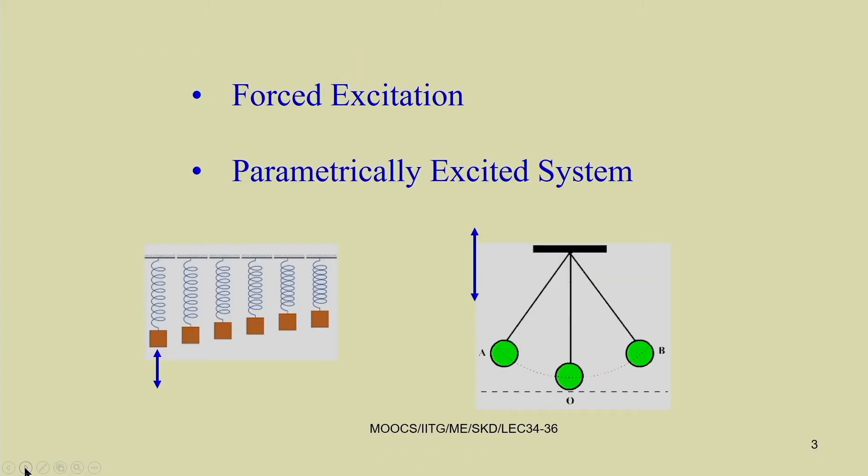We have already seen different types of systems — for example, the Duffing oscillator, the Van der Pol oscillator, and Mathieu-Hill type equations in previous classes. Today we will see how periodic, quasi-periodic, and chaotic responses are generated in different systems. In the previous classes we focused on fixed point response; now our objective is to study periodic, quasi-periodic, and chaotic responses. We have discussed forced excitation and parametrically excited systems.